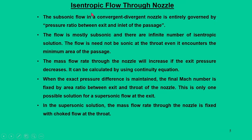To provide background: when we talked about isentropic flow through a nozzle, the flow is completely isentropic — either subsonic or supersonic. For subsonic flow there are infinite solutions, while for supersonic flow there is only one unique solution. To summarize our last discussion: subsonic flow in a convergent-divergent nozzle is entirely governed by the pressure ratio between exit and inlet, and there are infinite isentropic solutions.